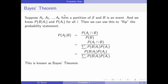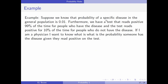Here's Bayes' theorem — it uses the law of total probability, and that's why we did that first. What it allows us to do is essentially flip the probability statement. If I have the probability of A_j given B, that's the probability of A_j intersect B over the probability of B, which equals the probability of A_j intersect B over the sum of the probability of B given A_i times the probability of A_i. This gives us a way to flip these over and re-update our information — that's essentially what Bayes' theorem does.